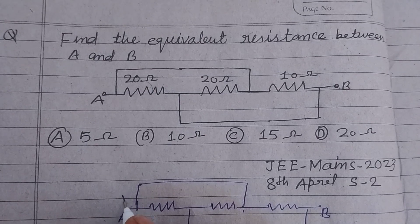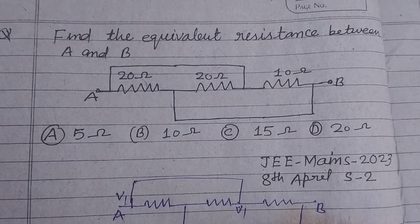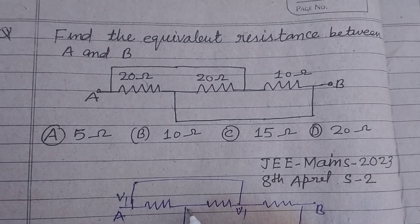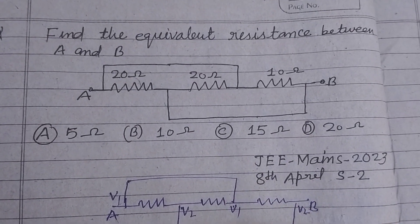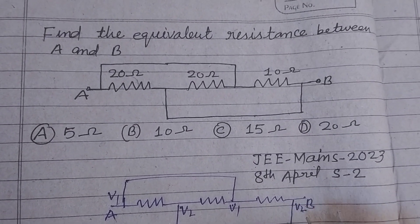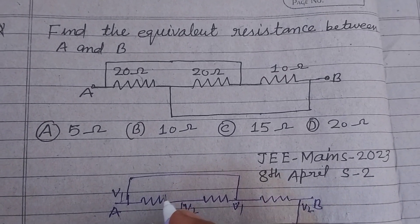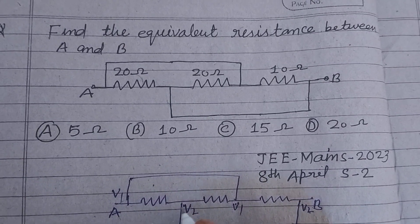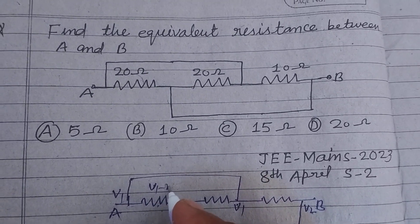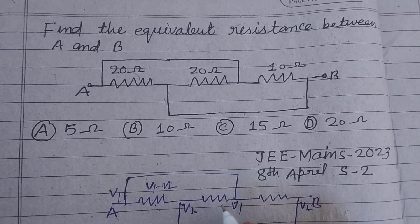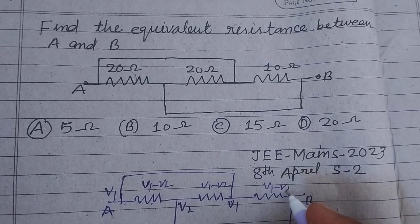So let this be V1 and this is V1 because they are connected with the same potential. This is V2 and V2, they are also connected by wire, so they have the same potential. Therefore, the potential difference across this resistance is V1 minus V2, and with this resistance V1 minus V2, and with this resistance V1 minus V2.